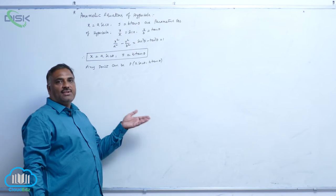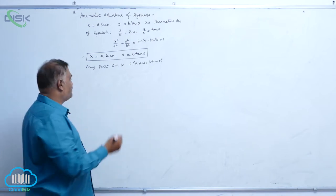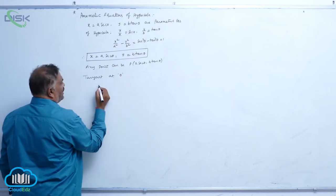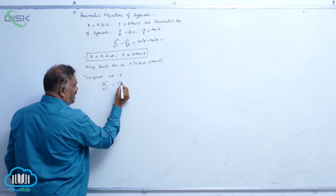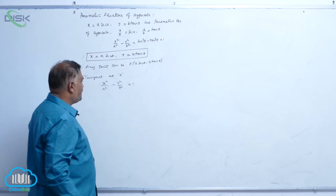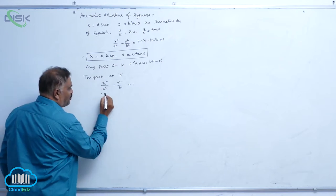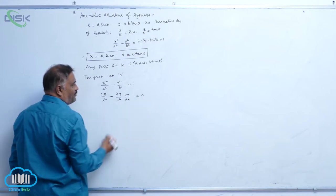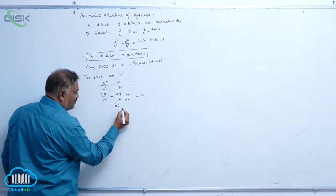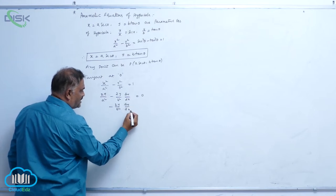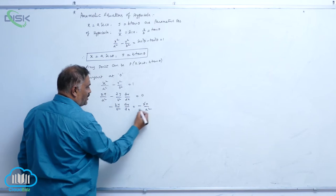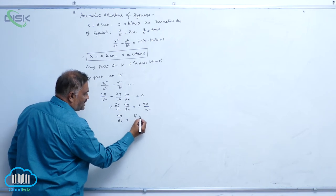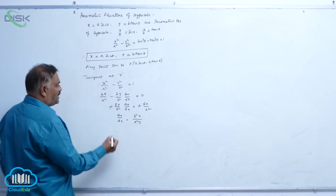Now let us find the tangent and normal at the point theta. Consider x squared by a squared minus y squared by b squared equal to 1. Differentiating: 2x by a squared minus 2y by b squared times dy by dx equals 0. Rearranging, dy by dx equals b squared x by a squared y.